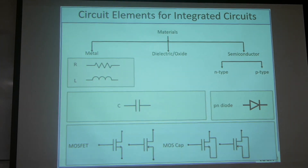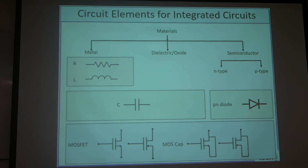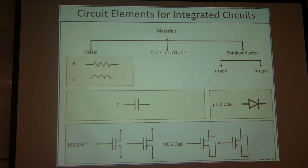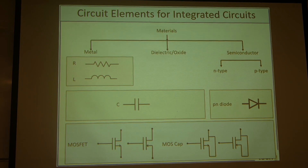To start with, I'll go through fundamental circuit elements, with materials based on metal, dielectric, and semiconductor. They are divided into three categories based on electrical conductivity. If the conductivity is larger than generally 100 Siemens per centimeter, it will be metal. The metal-only circuit elements are resistor and inductor.